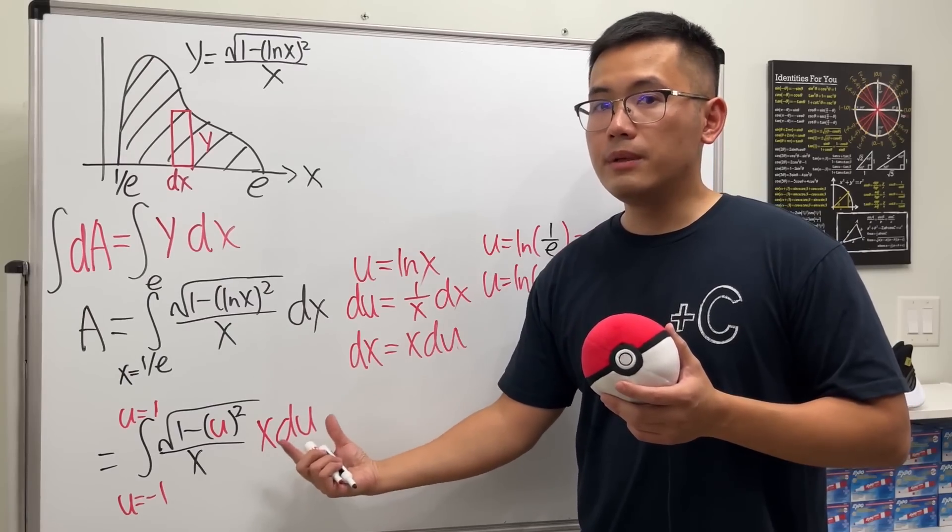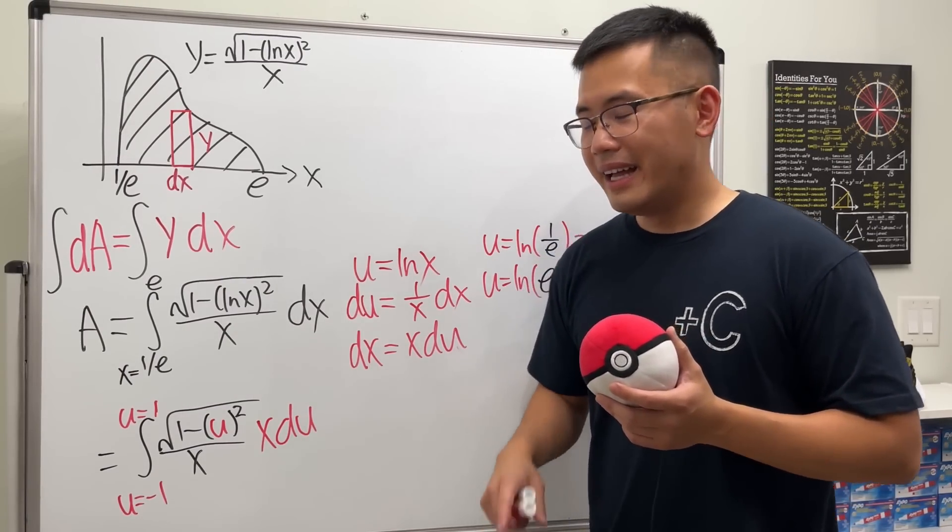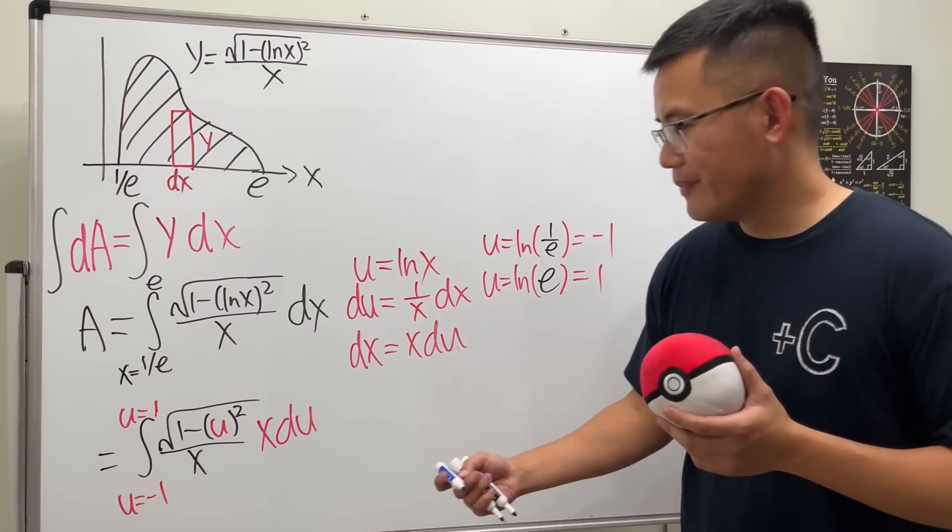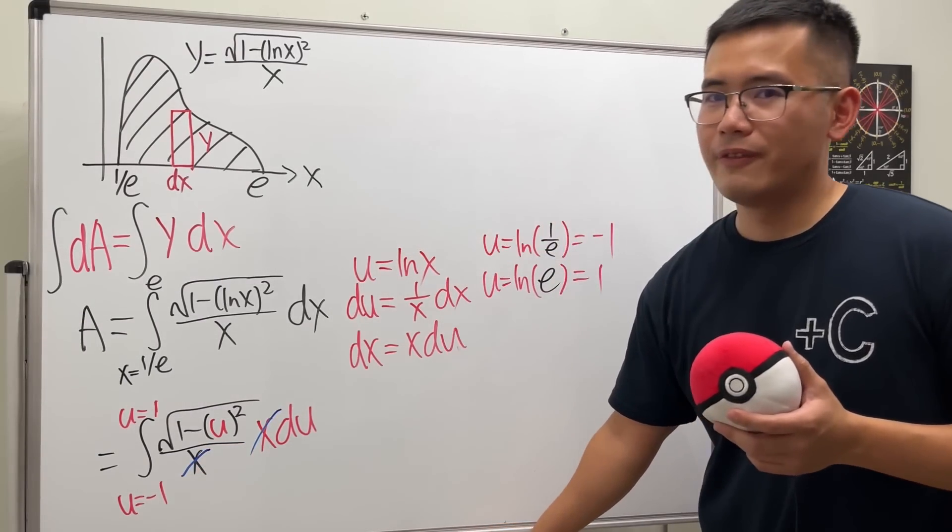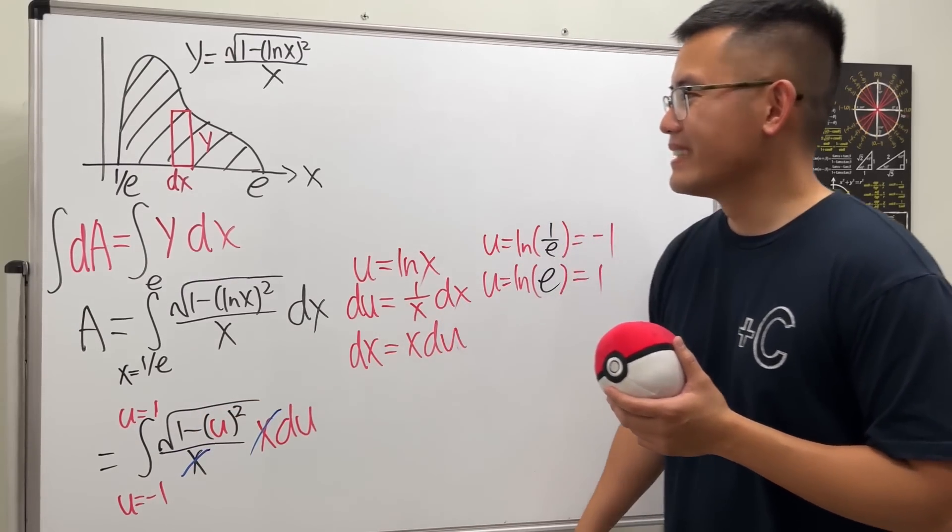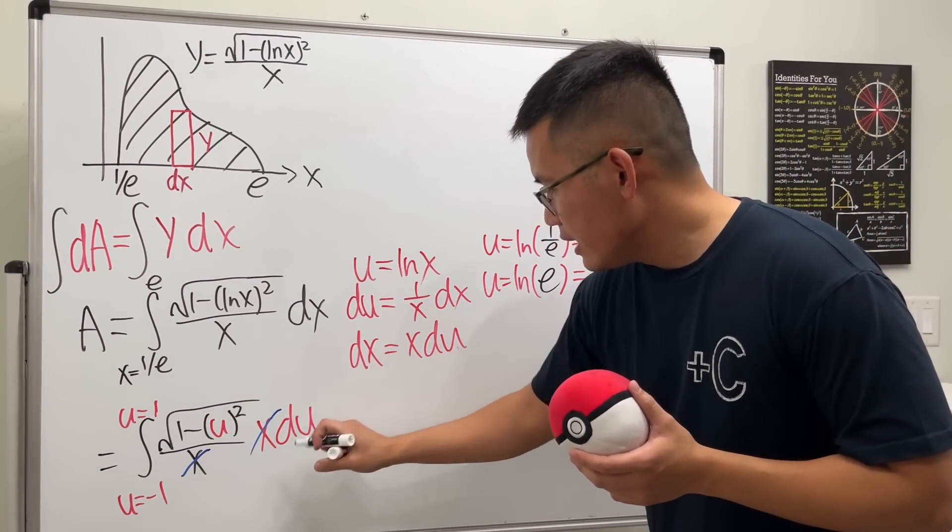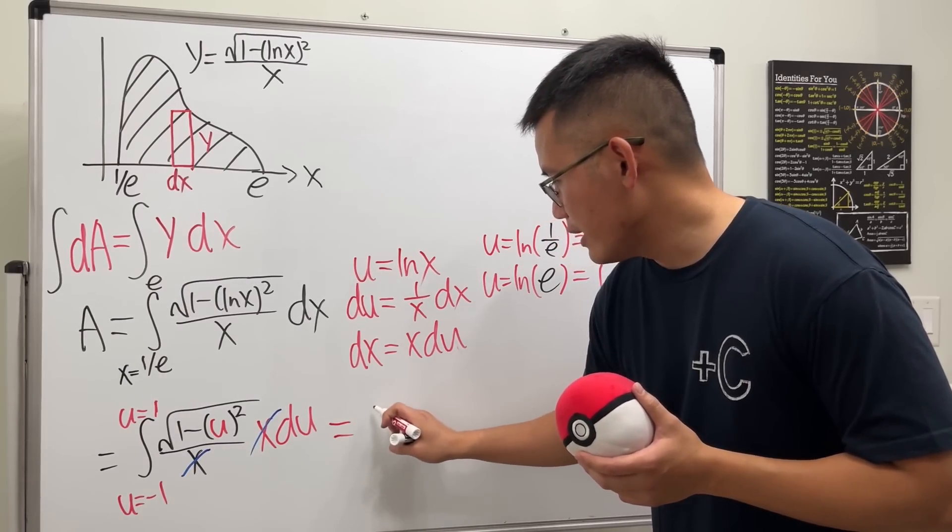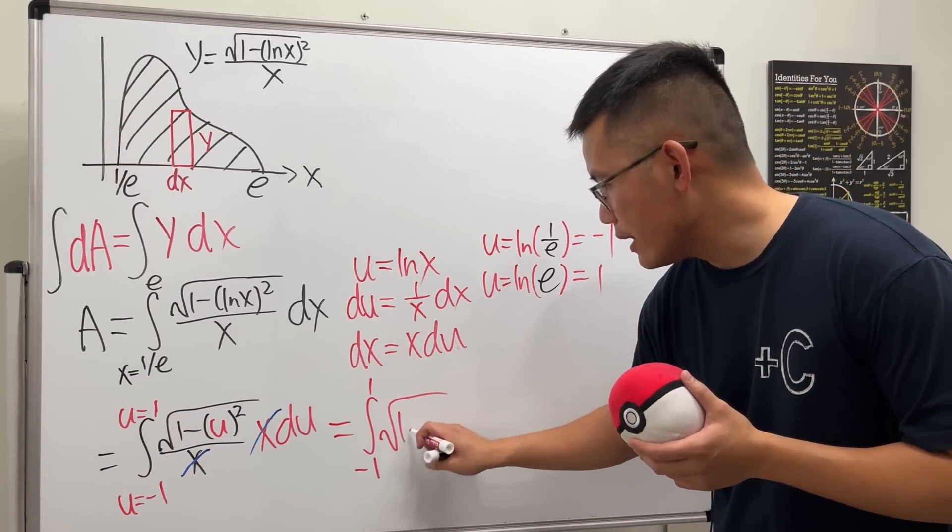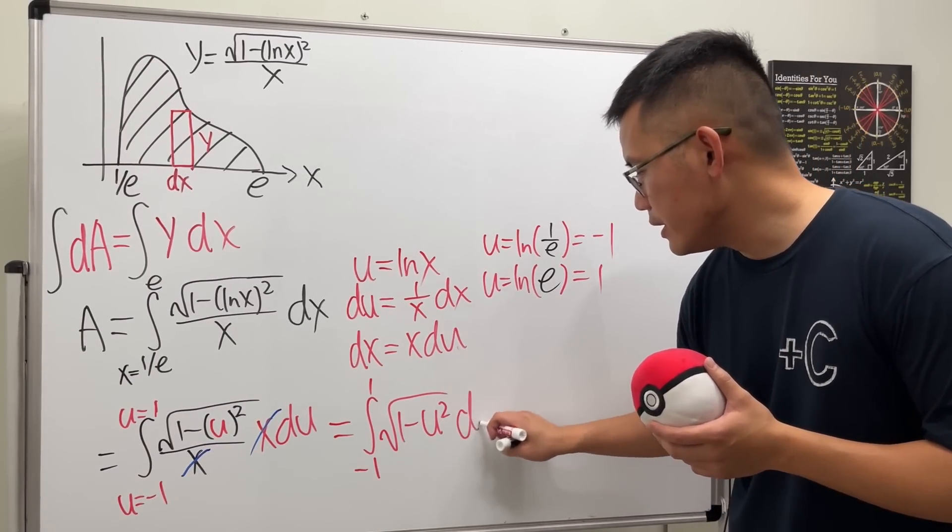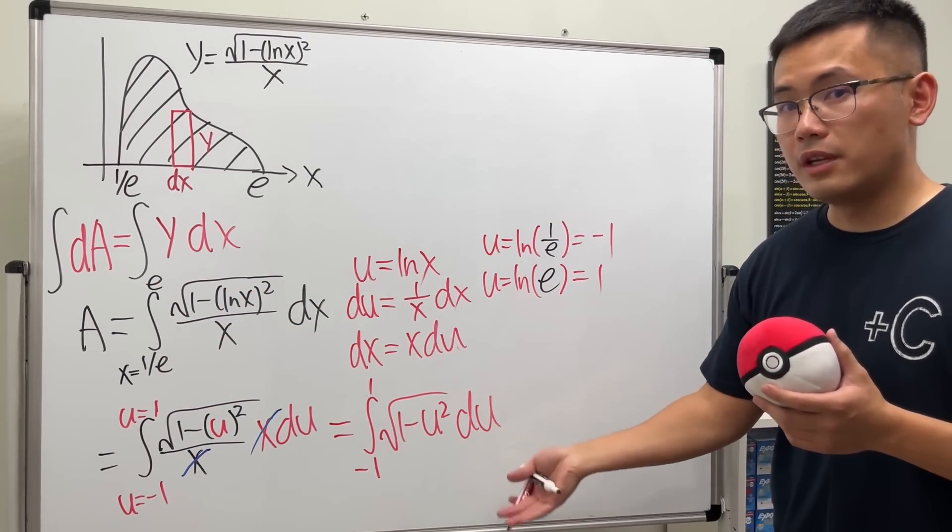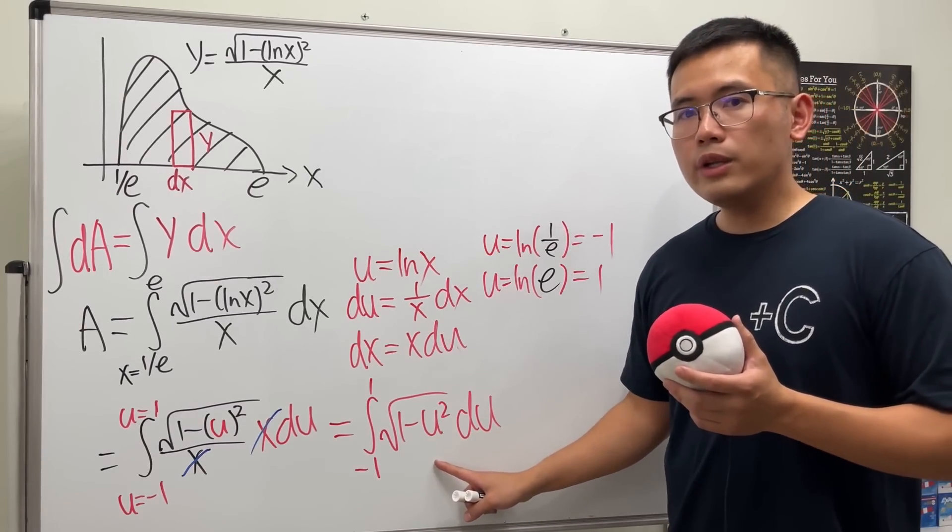This part is extremely important—it tells you which world we are in. Not only that, notice once we replace the dx with x du, the x here and the x here cancel. Very nice, because you have to keep in mind that x is not allowed in the u world. So what exactly are we going to get in terms of u? We are looking at the integral from -1 to 1 of square root of 1 minus u² du. This integral is equivalent to that integral in terms of their values.